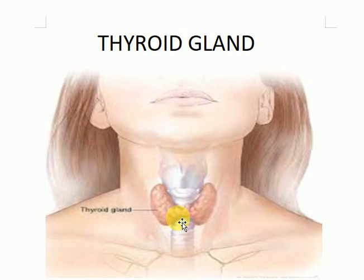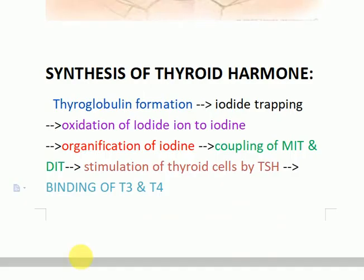First we will discuss the synthesis of thyroid hormone secreted by the thyroid gland, then the secretion, the regulation of this hormone, and finally the actions it performs in our body. The steps of thyroid hormone synthesis are: thyroglobulin formation, iodide trapping, oxidation of iodide ion into iodine, organification of iodine, and then coupling of MIT and DIT.